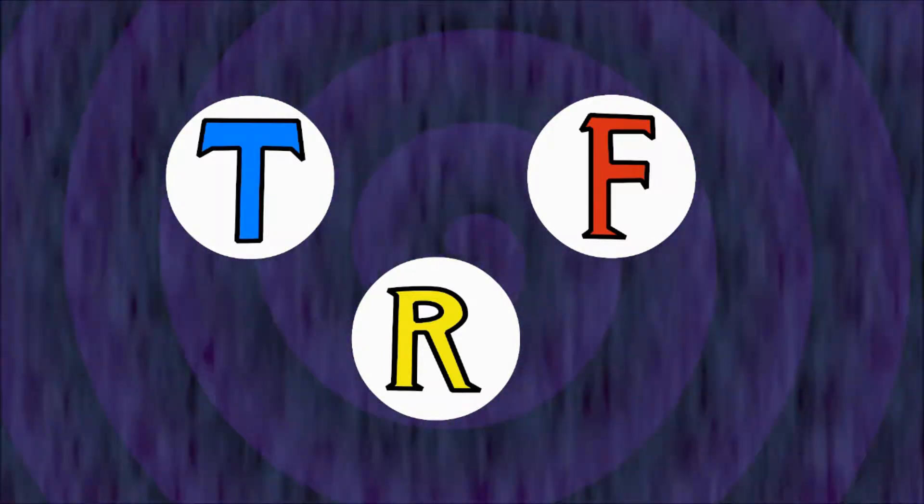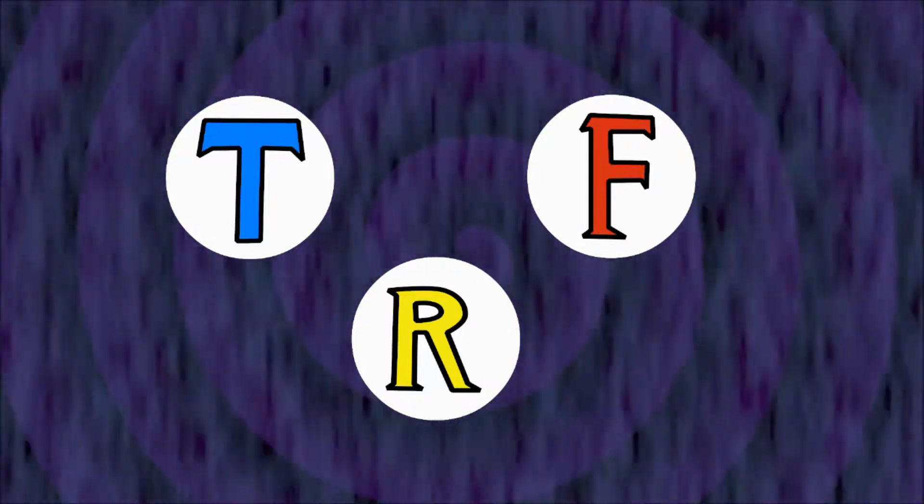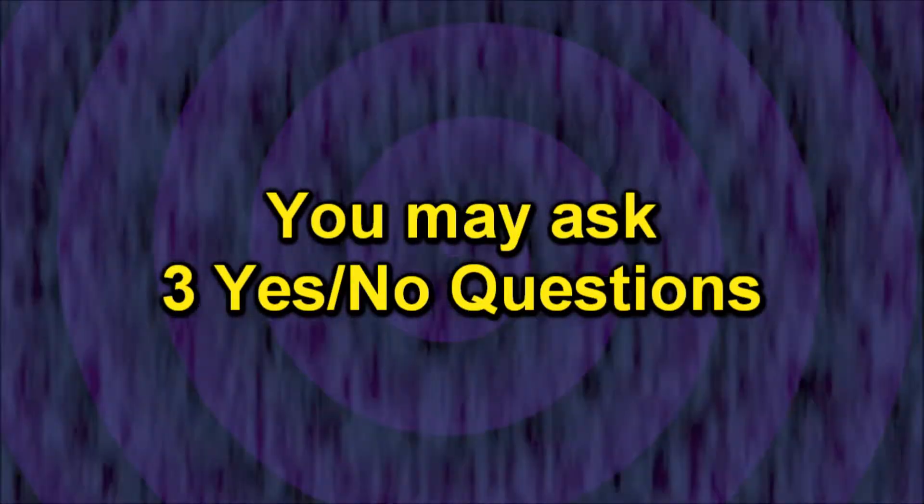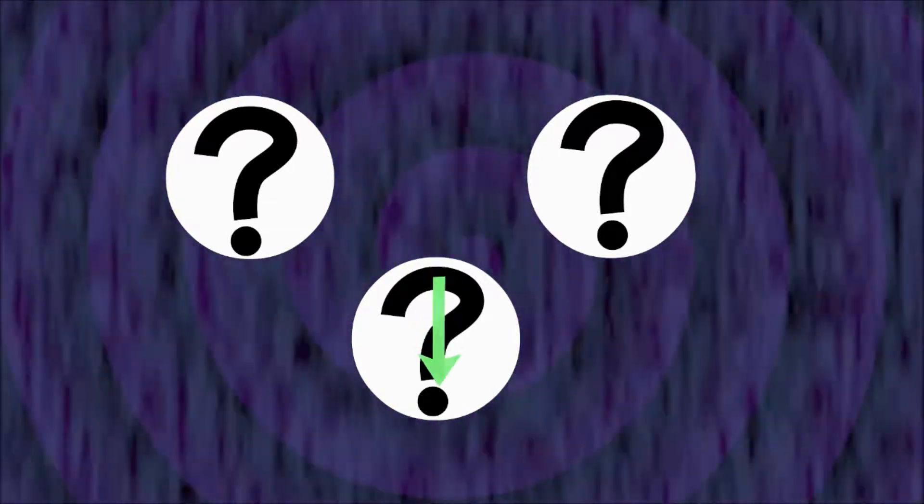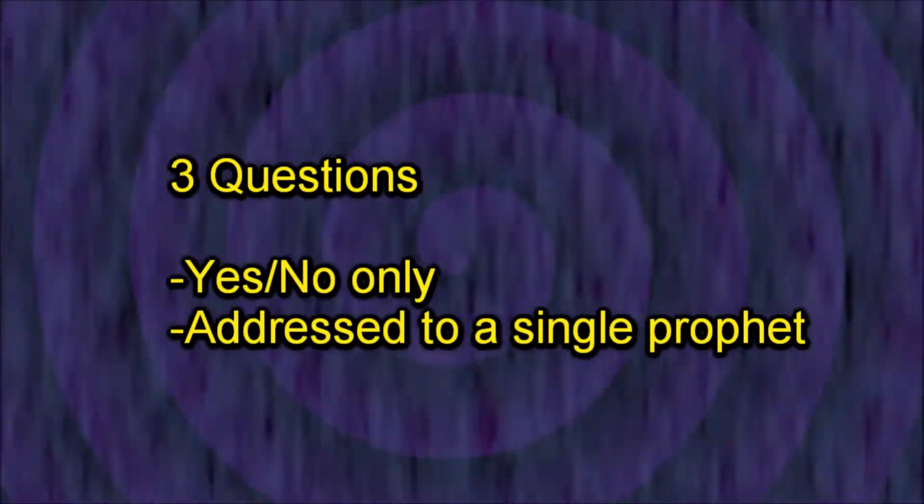All three prophets look identical, and the only way you can discover who is whom is to ask them questions. You may ask exactly three yes or no questions. You can ask the same question to all three prophets, or you can ask one prophet three questions or any combination. But you have three questions which must be addressed to a specific prophet.